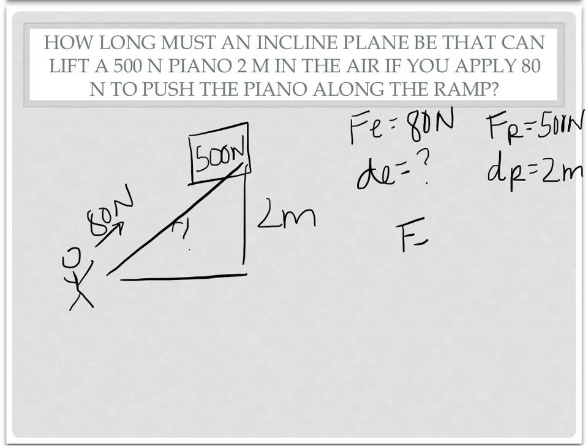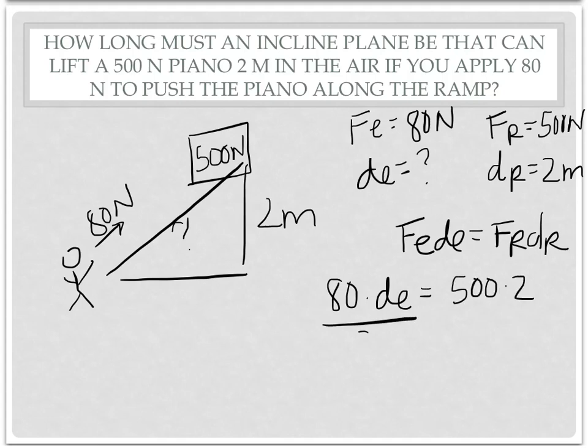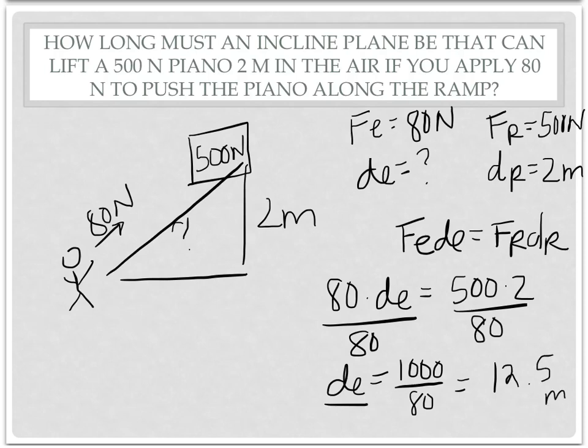So if we plug that in, you're going to get 80 times DE equals 500 times 2. To get DE by itself, divided by 80. So you're going to have DE equals 1,000 divided by 80, which simplifies to 12.5. And since it's DE, your units will be meters.